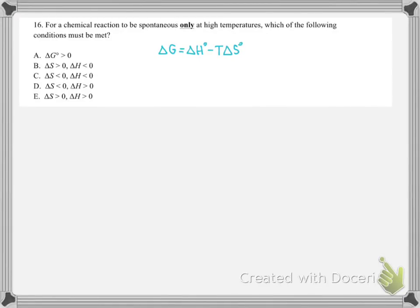This question asks for a reaction to be spontaneous only at high temperatures. Which of the following conditions must be met? Remember that free energy is the product of enthalpy minus temperature times the entropy change. If we have a negative delta G, that means we have a spontaneous reaction. If we have a positive delta G, that means a non-spontaneous reaction. So how can we get it so that the reaction is spontaneous only at high temperatures? Well, that's going to be if we have a positive enthalpy, so an endothermic reaction, and a positive entropy.